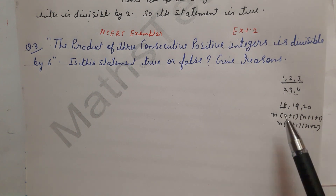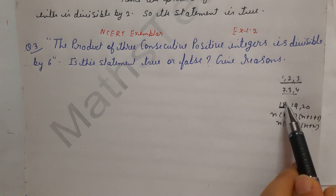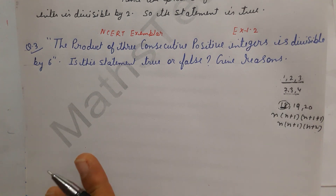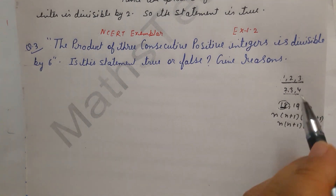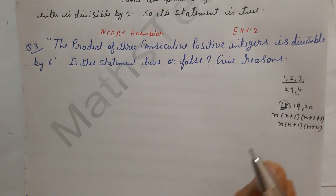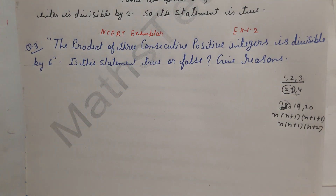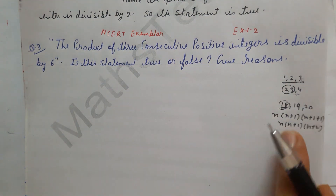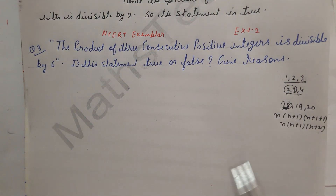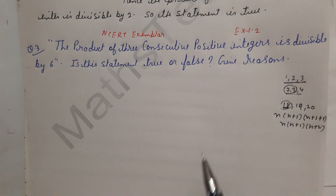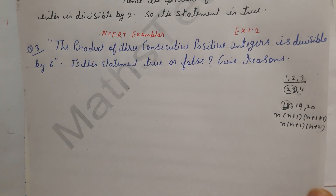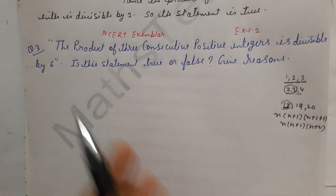I am showing two conditions here. Either there will be one number which is directly divisible by 6, so the product will be divisible by 6. The other condition is that even if no number is divisible by 6, there will be factors of 2 and 3 among the numbers, and 2 times 3 makes 6, so the product will still be divisible by 6.